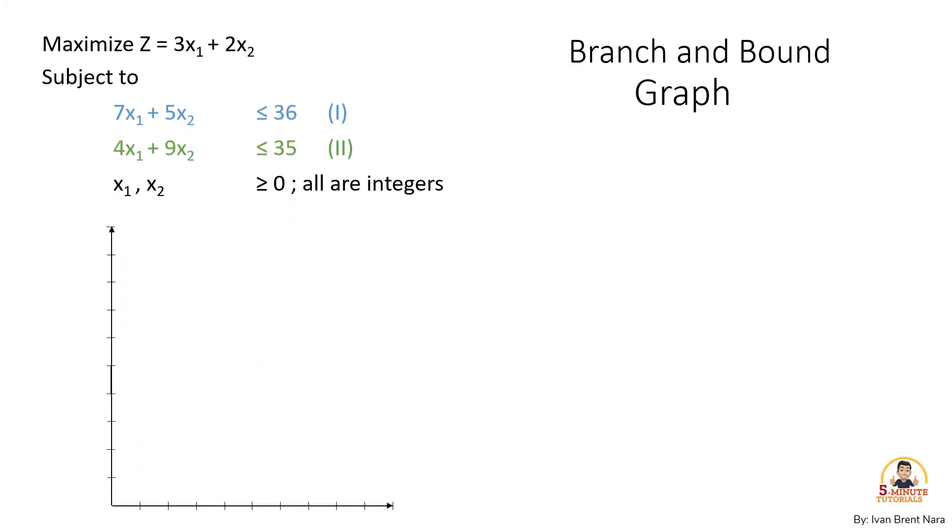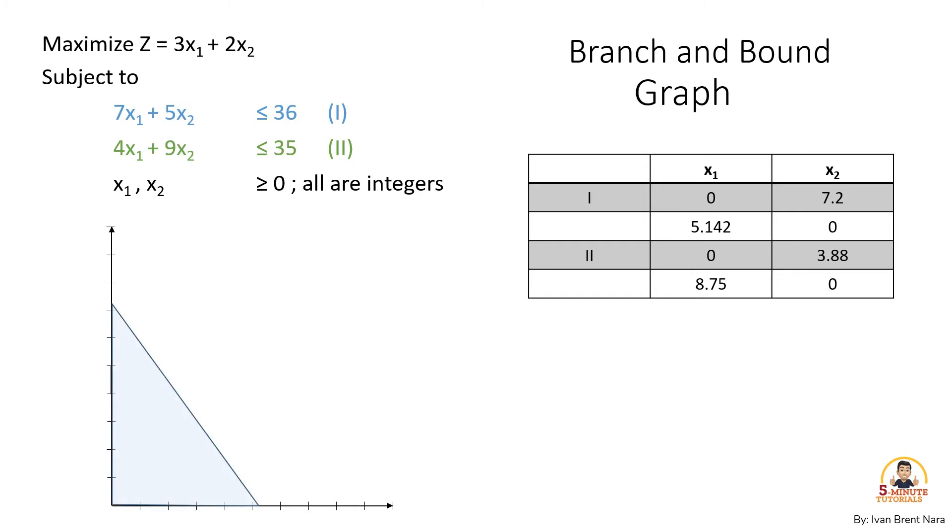First, try to graph both constraints 1 and 2 by assigning zeros to x sub 1 and x sub 2 interchangeably as seen in the table. The variable x sub 1 lies in x-axis and x sub 2 is in y-axis.